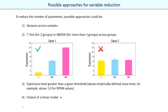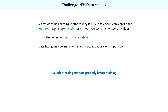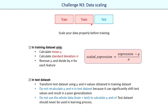The last challenge we will discuss is data scaling. In omics data, the parameters usually have different scales, which may result in poor convergence for machine learning methods. So we need to scale data before training any machine learning algorithm. A basic technique is to scale data by centering and reducing: we use the training dataset only to measure the mean and standard deviation across samples for each gene separately, then calculate a scaled value by removing the mean and dividing by the standard deviation in both training and test datasets. For the test dataset, we don't recalculate the mean and standard deviation — we use those obtained from the training dataset. Otherwise we introduce a leakage of information.